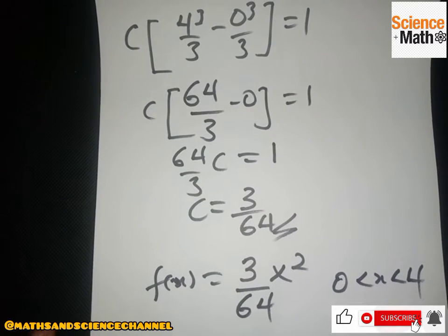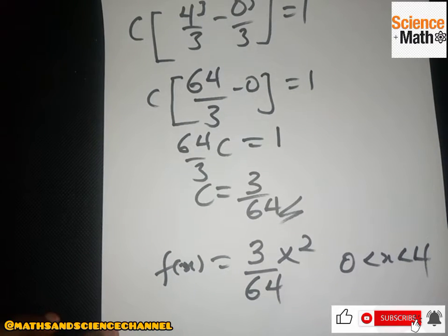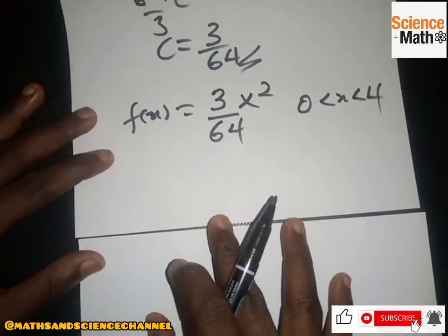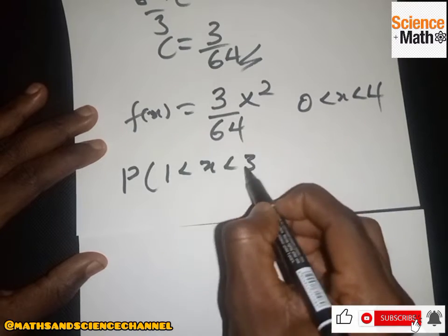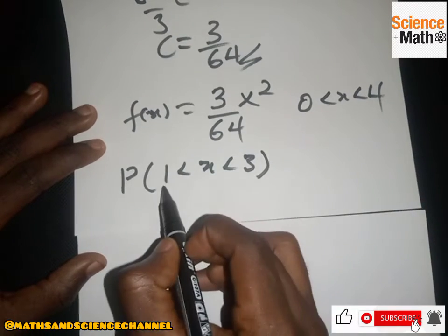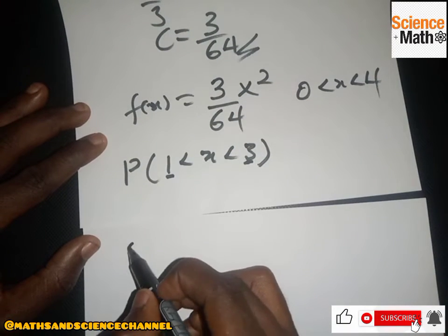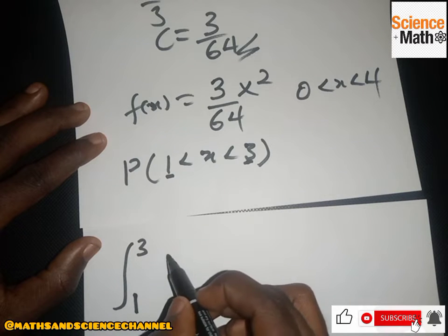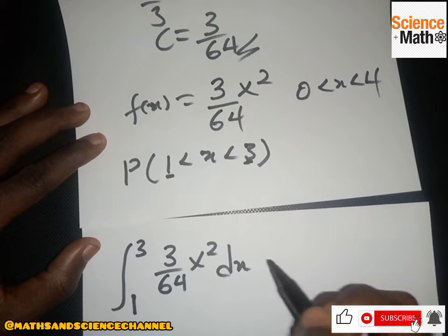The next question asks us to find the probability that 1 < s < 3. In this case we are given our lower limit as 1 and upper limit as 3. So we set up the integral from 1 to 3 of (3/64)s² ds.